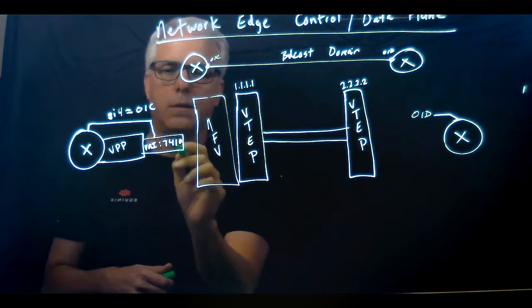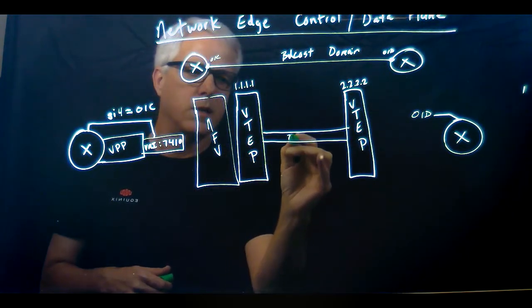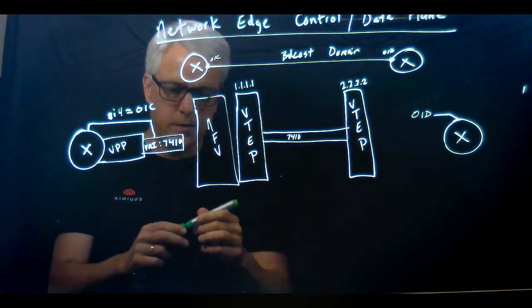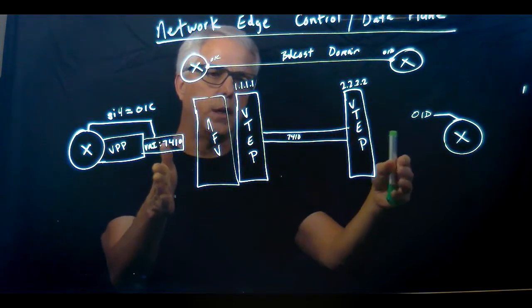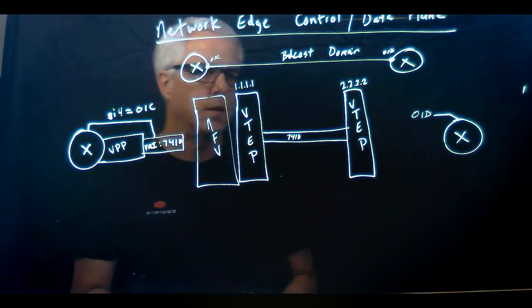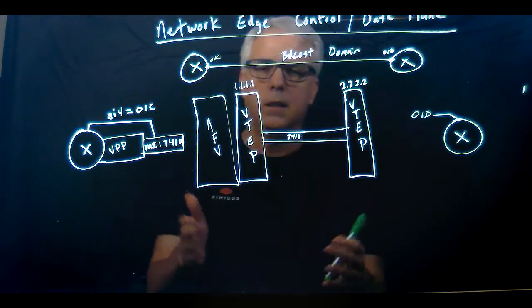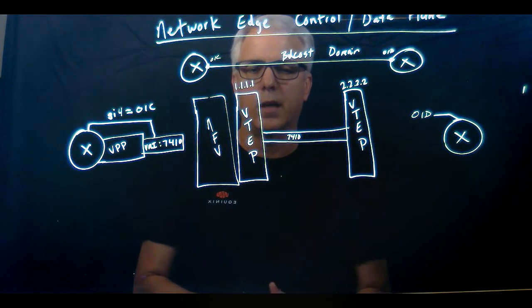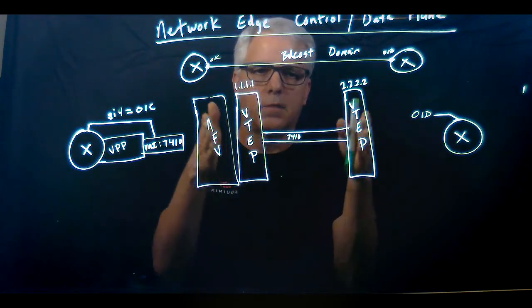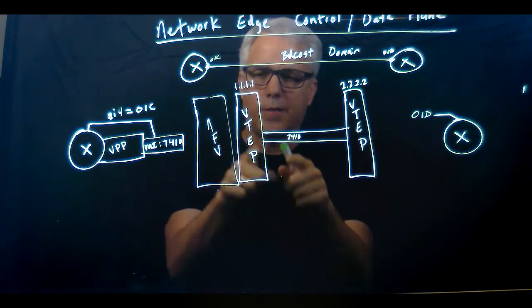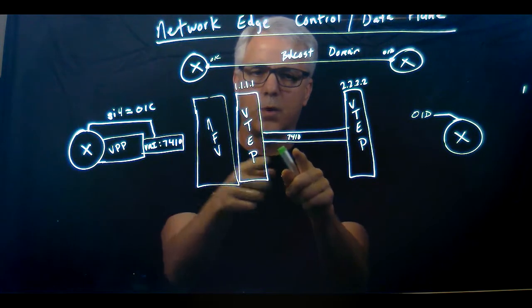I'm trying to get VNI 7410 passed across this EVPN infrastructure. So EVPN is the control plane, and EVPN stands for Ethernet Virtual Private Network. As part of this EVPN control plane, I've got to get VNI 7410 across this backlog.